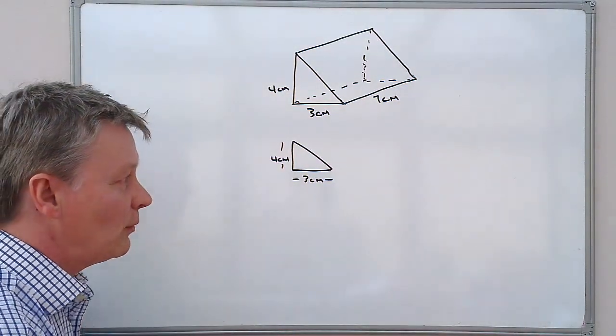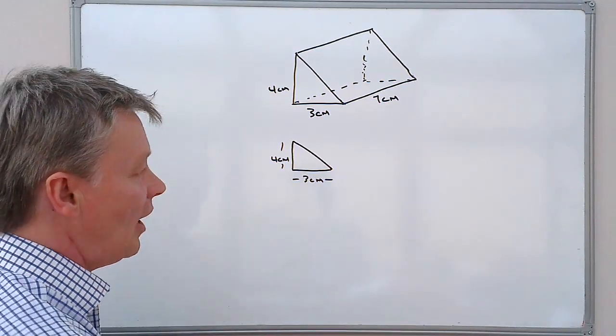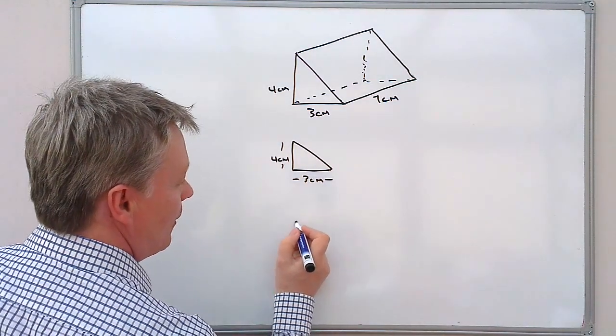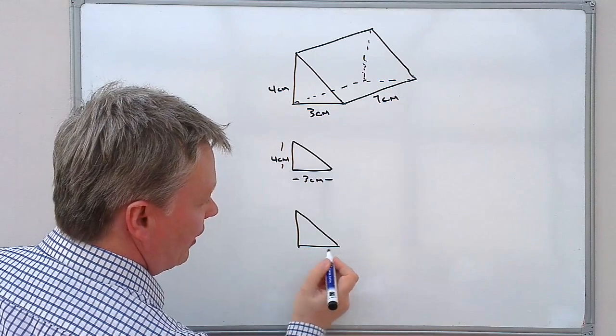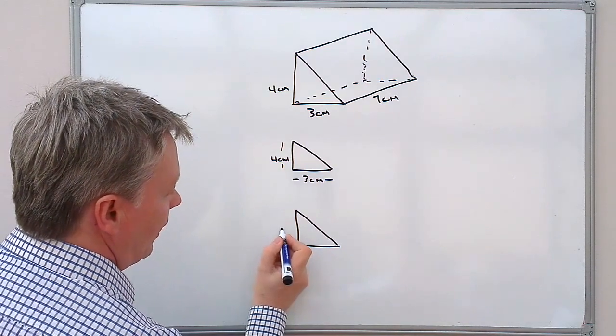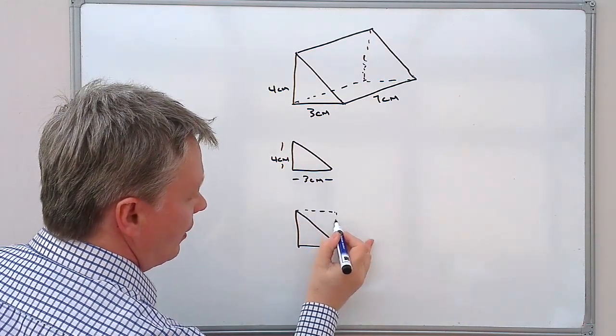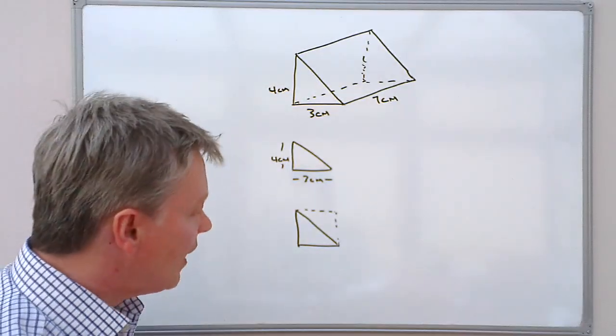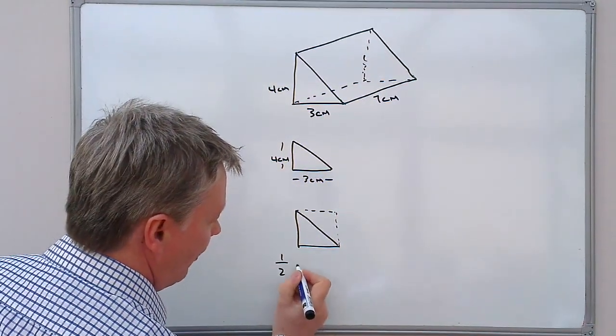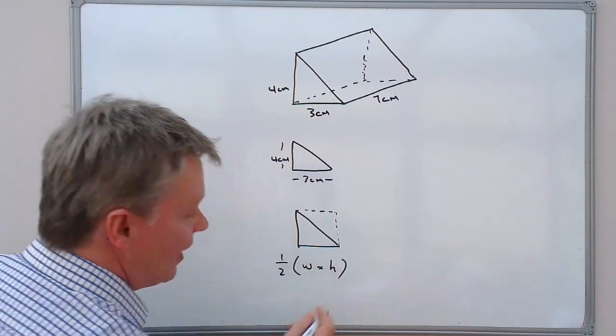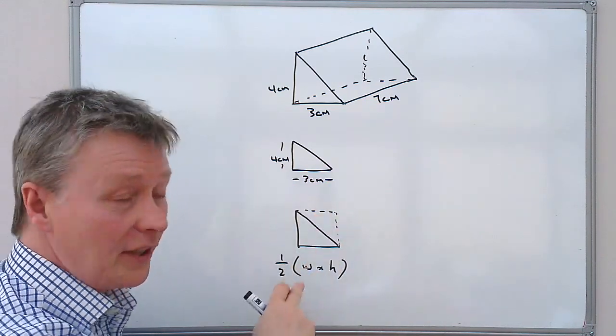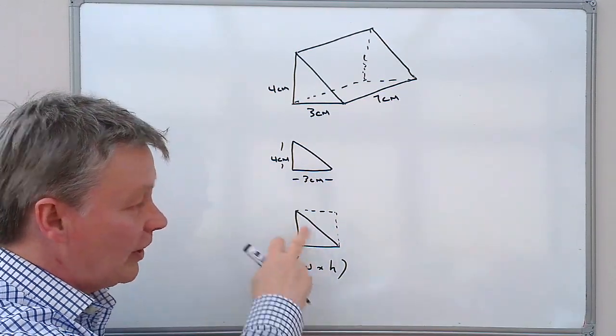It's fairly straightforward because what we're looking to do is to half its equivalent rectangle. So what I mean by that is that you've got any triangle really and providing you know the overall height and the overall width, effectively what we do then is put it into a rectangle and then divide it by two. Now sometimes you'll see these formulas and it'll say something like a half width times height and that's exactly true because width times height is the overall area of the rectangle and then we multiply it by a half and we get the area of the triangle.